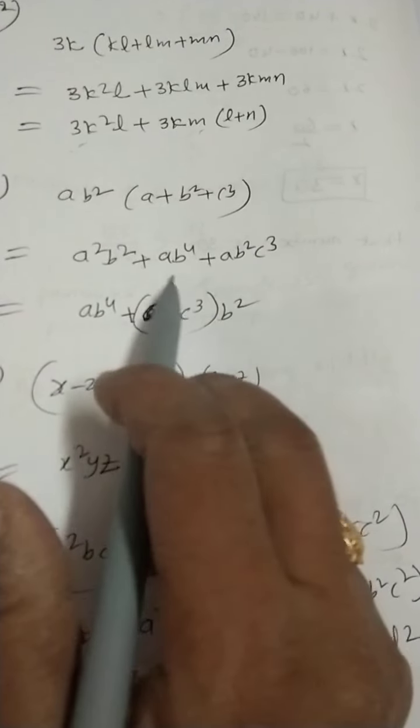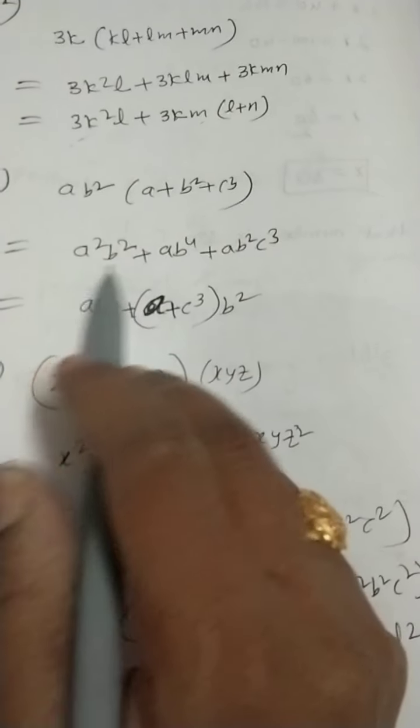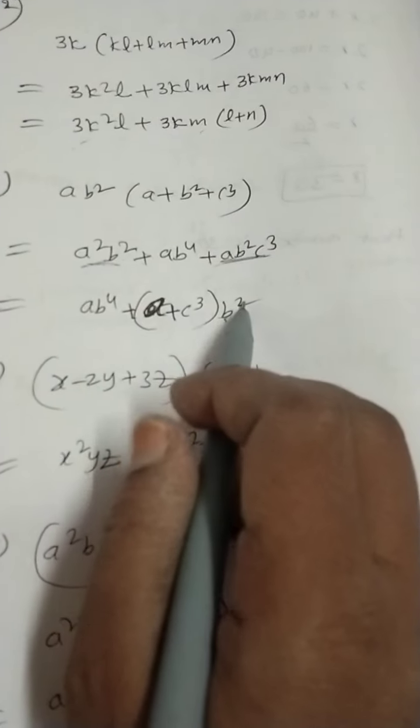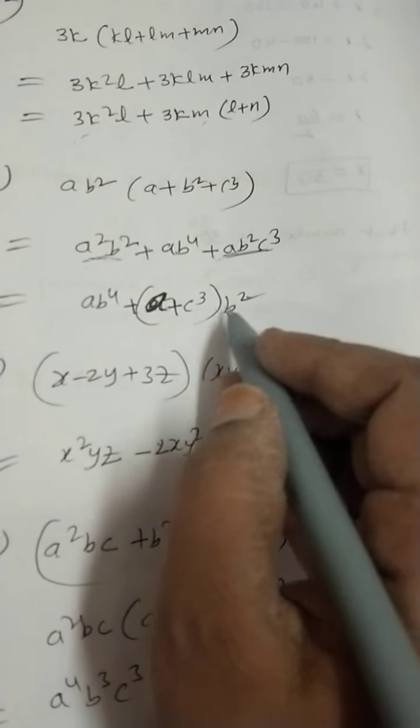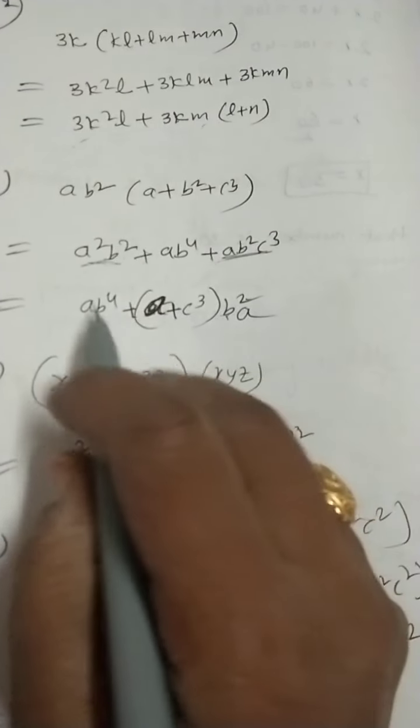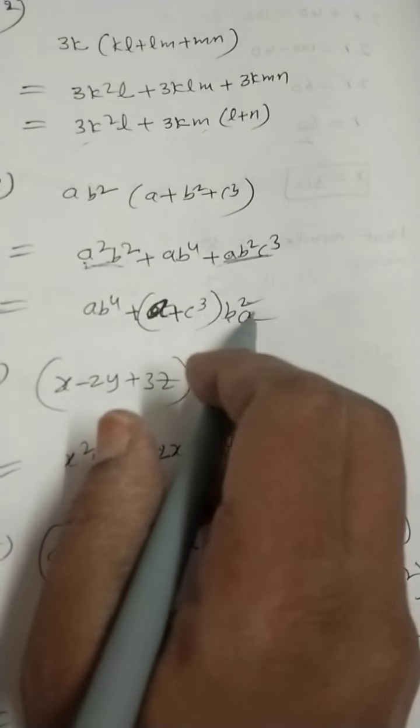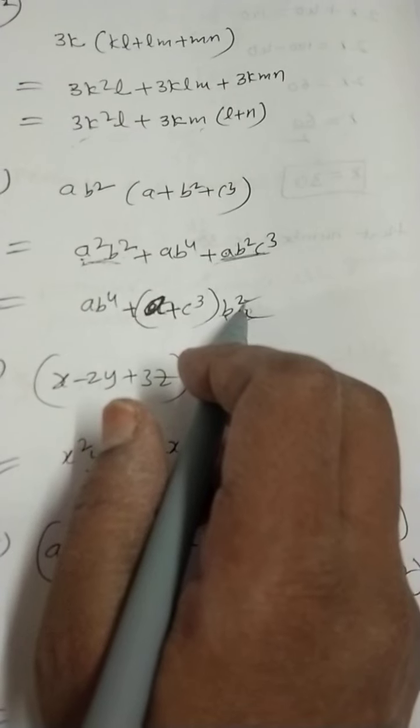If you want, leave it. Otherwise, one more step, if you want, you can write. ab power 4 as it is, I don't place. In these two terms, if you observe, b² is common. So, b² you can take common. Remaining is, a also, we can take common. Sorry. A also, we can take common.